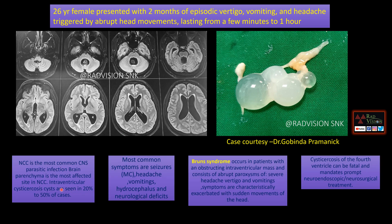The most common CNS parasitic infection is neurocysticercosis (NCC). Intraventricular cysticercosis can be seen in 20 to 50 percent of cases; most common symptoms are seizures, headache, vomiting, and hydrocephalus. Remember Bruns syndrome — which occurs in patients with an intraventricular mass and typically presents with headache, vertigo, and vomiting, characteristically exacerbated with sudden head movements. Cysticercosis of the fourth ventricle is a fatal condition requiring immediate neuroendoscopic or neurosurgical treatment.